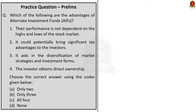The third question: which of the following are the advantages of Alternate Investment Funds or AIF? Statement 1 — their performance is not dependent on the highs and lows of the stock market: correct. Statement 2 — it could potentially bring significant tax advantages to investors: also correct. Statement 3 — it aids in diversification of market strategies and investment funds: also correct. Statement 4 — the investor obtains direct ownership in this format: all four statements are correct. So the correct option is option C.